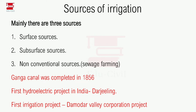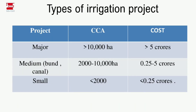The Ganga Canal was completed in 1856. This is the first hydroelectric project in India and the first major irrigation project. The Ganga Canal is also referred to as the second irrigation project in some references.